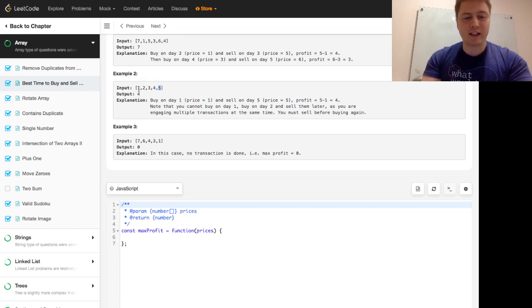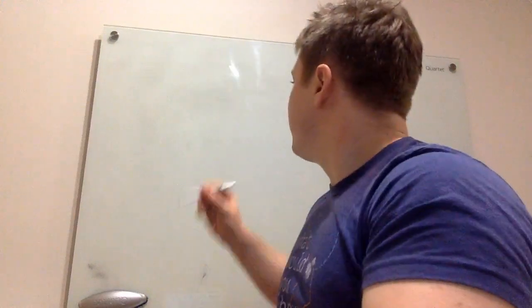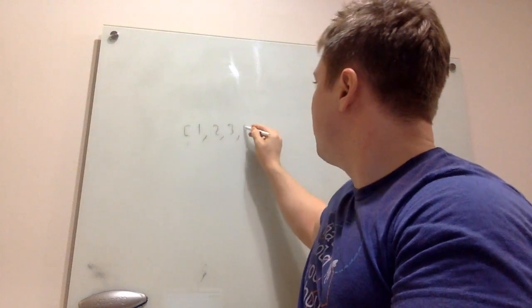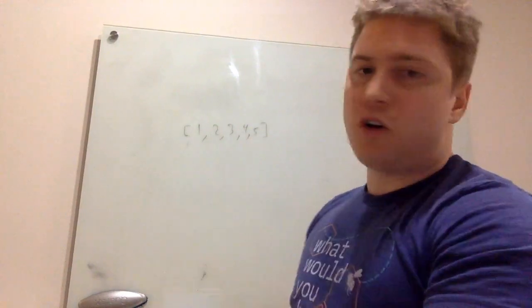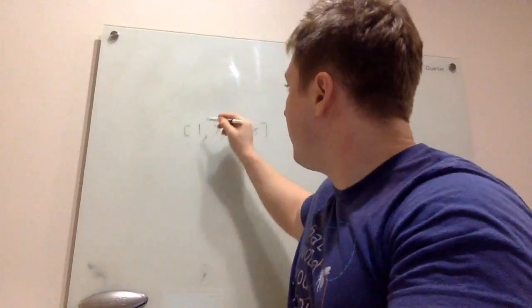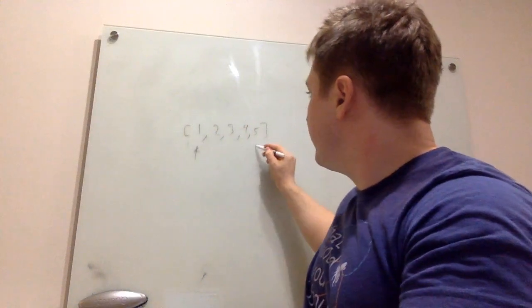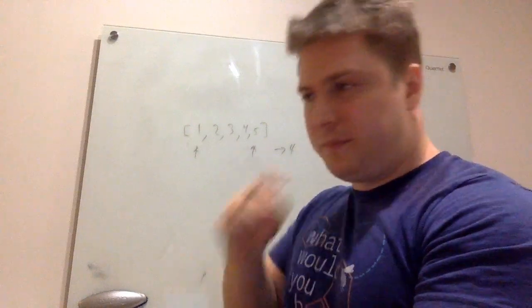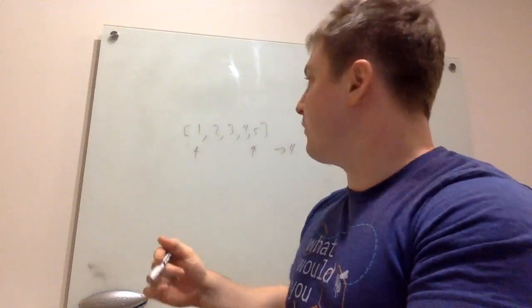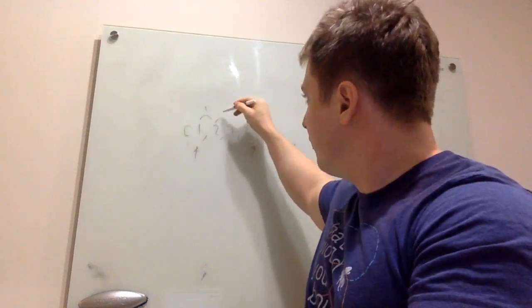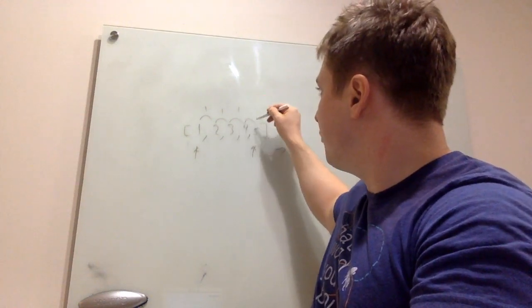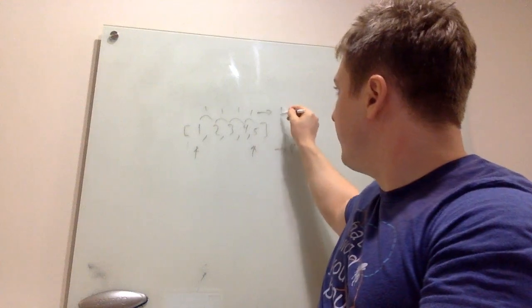Let's go to the big board. So if we have [1, 2, 3, 4, 5], per the instructions we can only buy on one day and sell on another day and that's 4. But actually you can make comparisons for every day — from 1 to 2 is 1, from 2 to 3 is 1, from 3 to 4 is 1, from 4 to 5 is 1, and these all add up to 4.